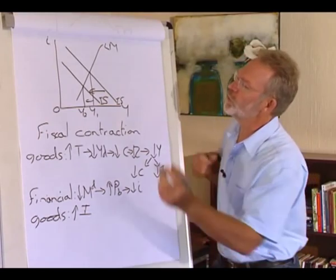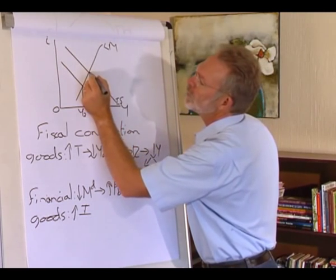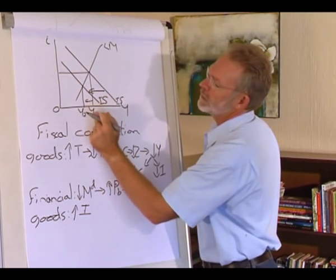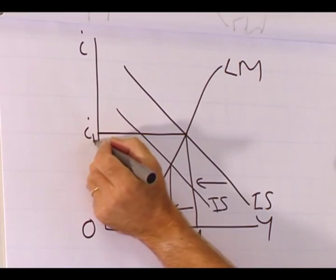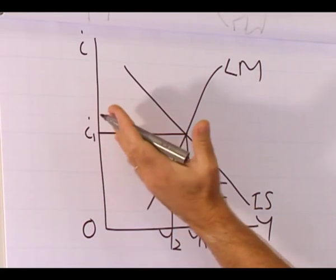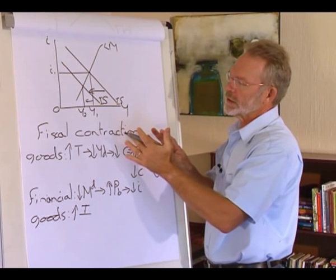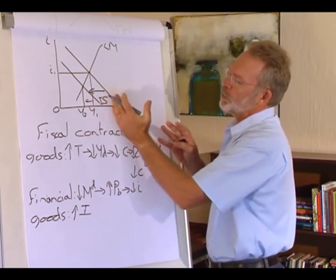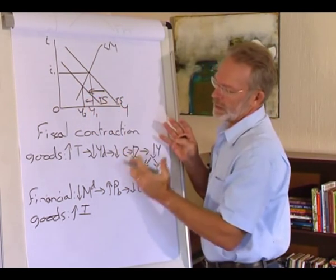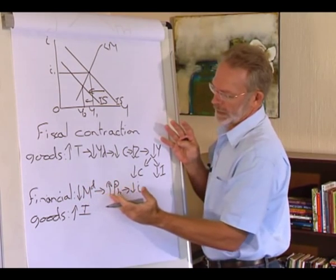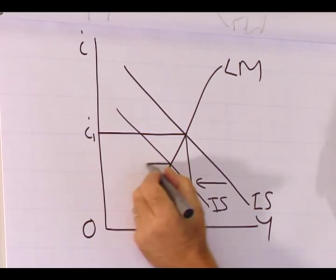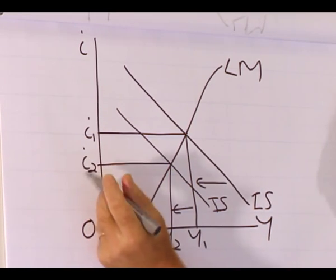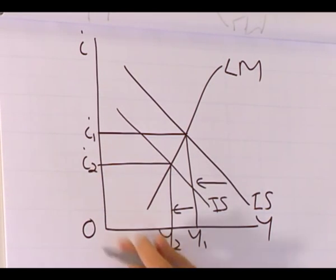If you really want to impress your examiner, you should refer to the interest rate. We started at initial output level Y1 and interest rate I1. Because of the fiscal contraction, the output level decreased, leading to a decreased demand for money, which decreased the interest rate — we can see that here as well. The equilibrium interest rate decreased to I2.